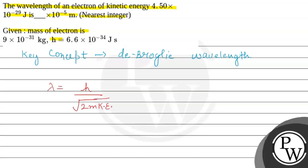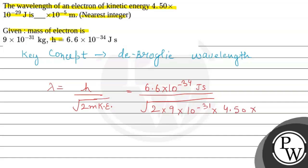We have to find the wavelength λ. Planck's constant h is given as 6.6 × 10⁻³⁴ joule·second, divided by the square root of 2 times the mass of the electron, which is 9 × 10⁻³¹ kg, multiplied by kinetic energy 4.50 × 10⁻²⁹ joule.